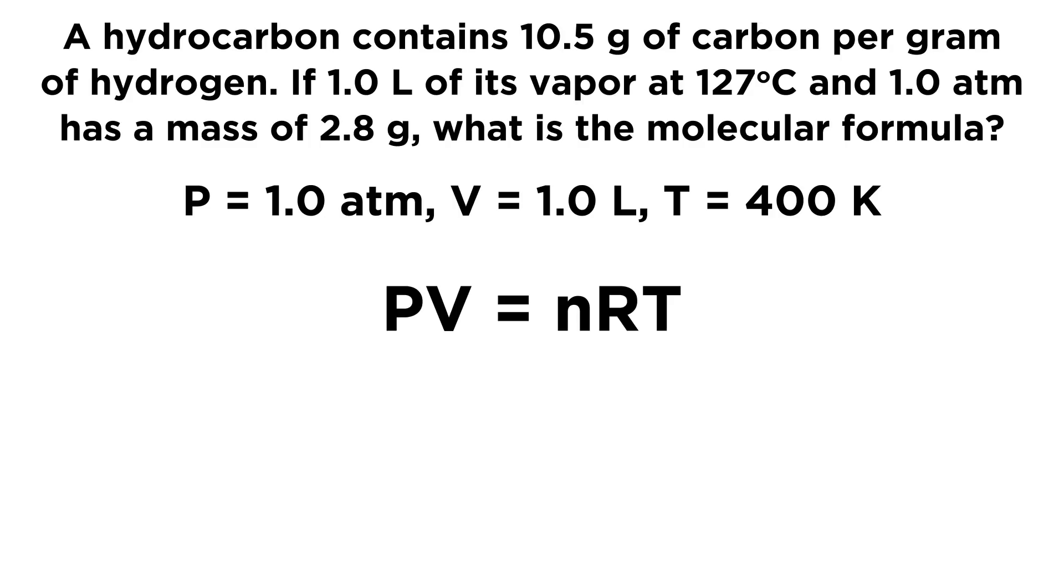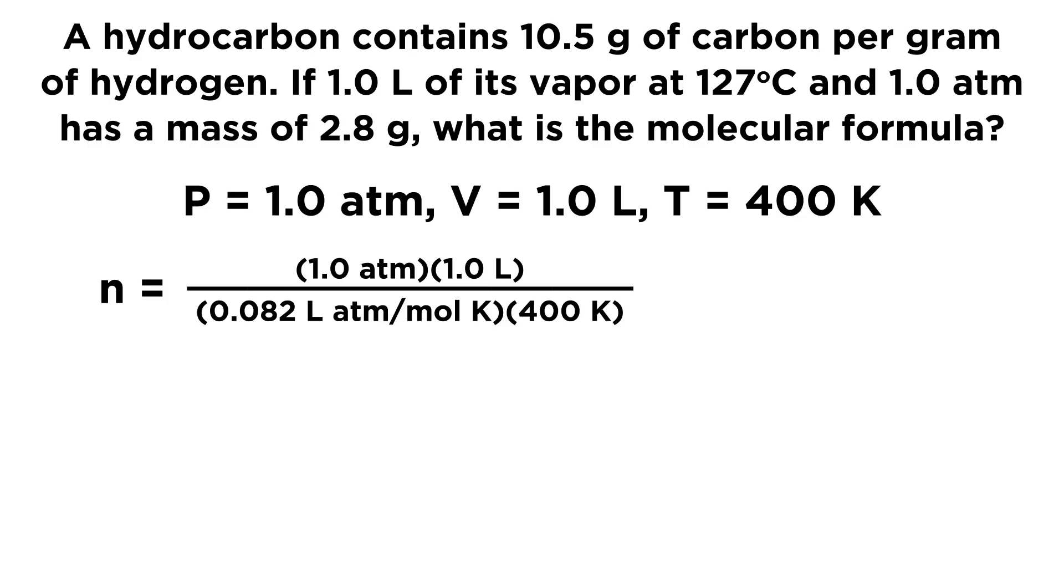Let's recall the ideal gas law, which is PV equals nRT. We have most of that data right now. The only thing we don't have is n moles. So let's rearrange this equation to solve for n. We get n equals PV over RT, and now we can just plug in what we know.